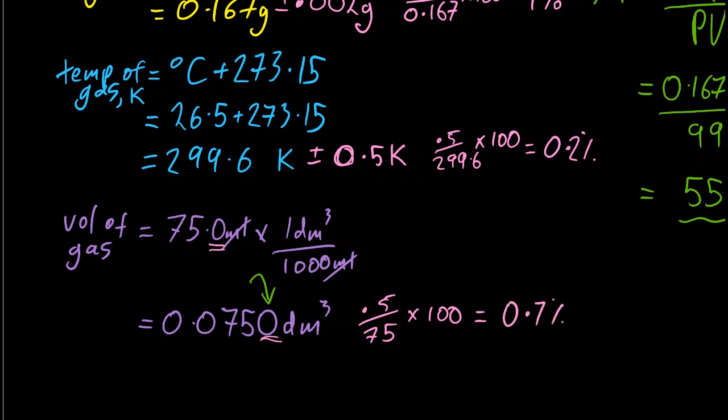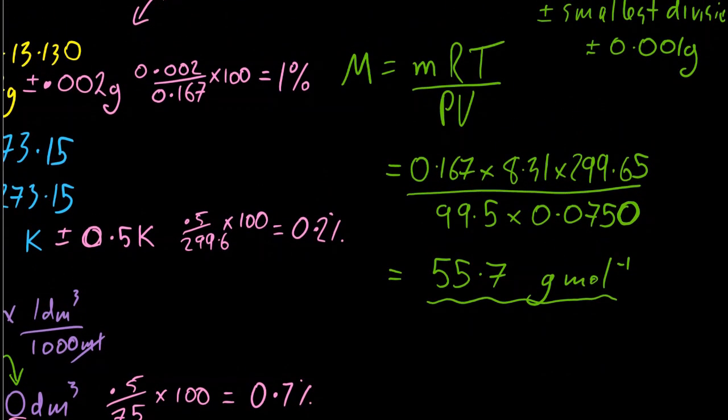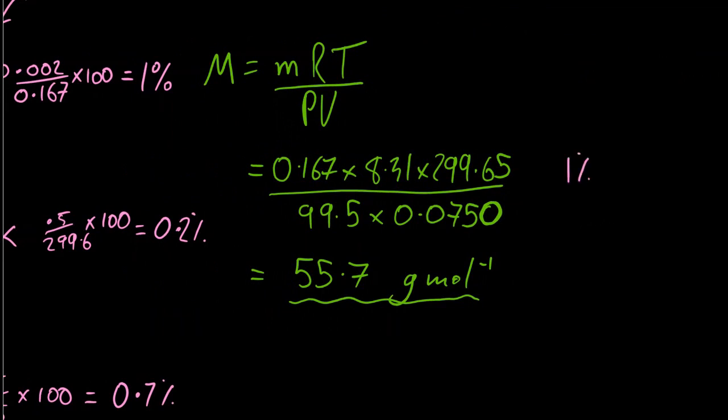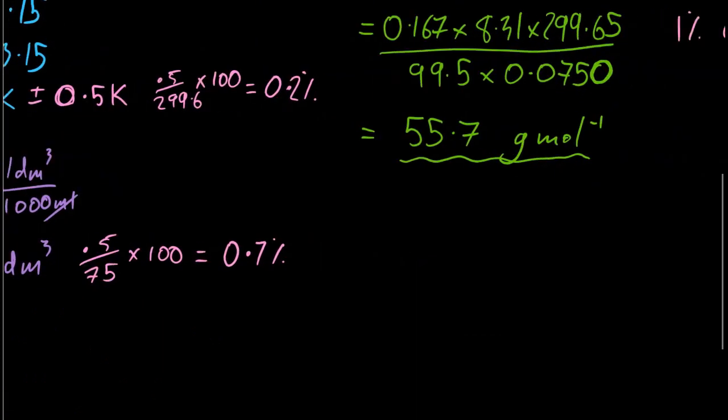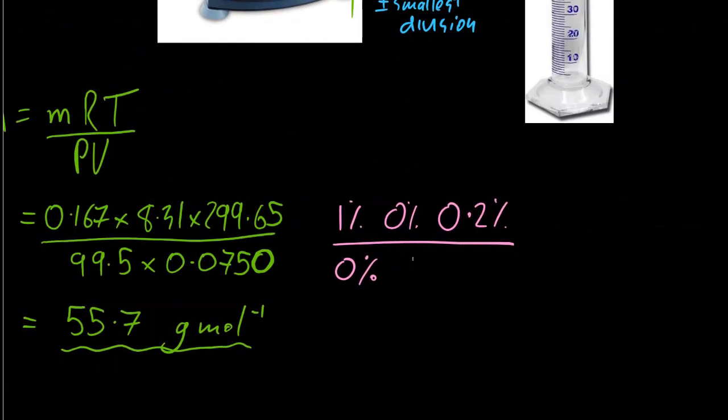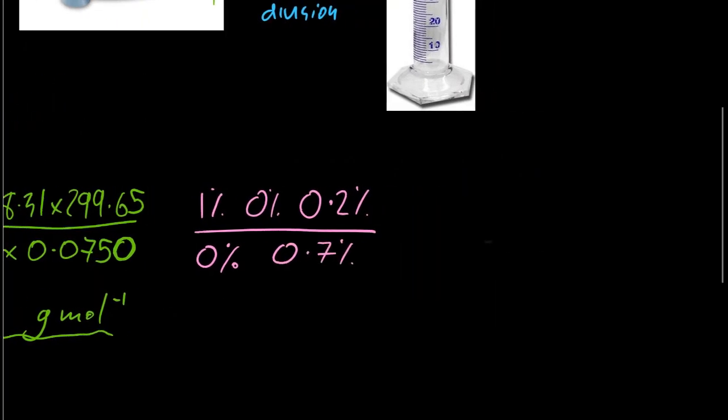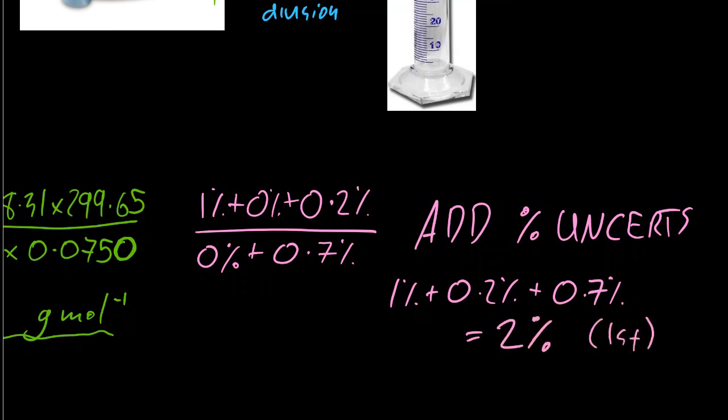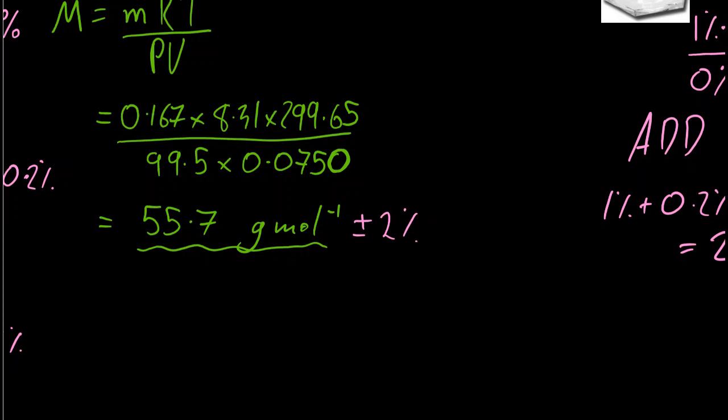So let's go back to the main ideal gas equation. So I'm going to do this in a bit of an overly complicated way. That was out by 1%. That was out by no percent. Temperature's out by 0.2. Nothing for the pressure. And 0.7 for the volume. Now you have to add them. You have to add the percentage uncertainties. So adding them all up gives me 2%. And like all uncertainties, you only report uncertainties to one significant figure. So my percentage uncertainty, like all uncertainties, is 2%. But what is 2% of my actual value? Well, 2% of 55.7 is, to one significant figure, 1. That is my absolute uncertainty.